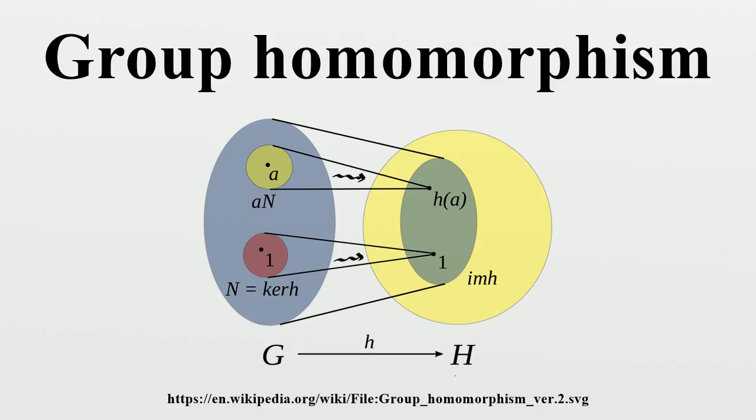Consider the multiplicative group of positive real numbers. For any complex number u the function f_u: R^+ → C defined by... is a group homomorphism. The exponential map yields a group homomorphism from the group of real numbers R with addition to the group of non-zero real numbers R* with multiplication. The kernel is {0}, and the image consists of the positive real numbers.